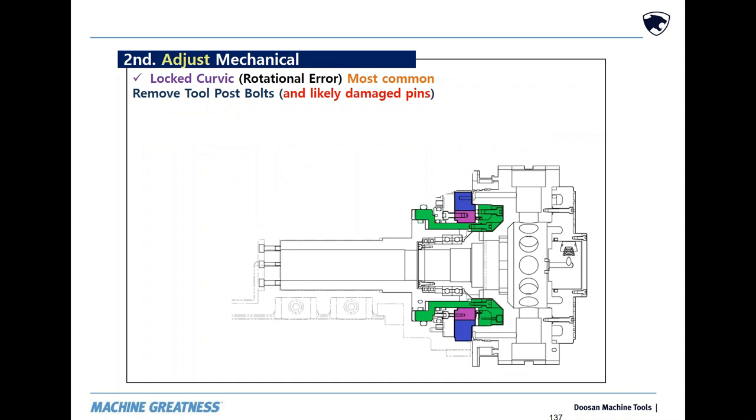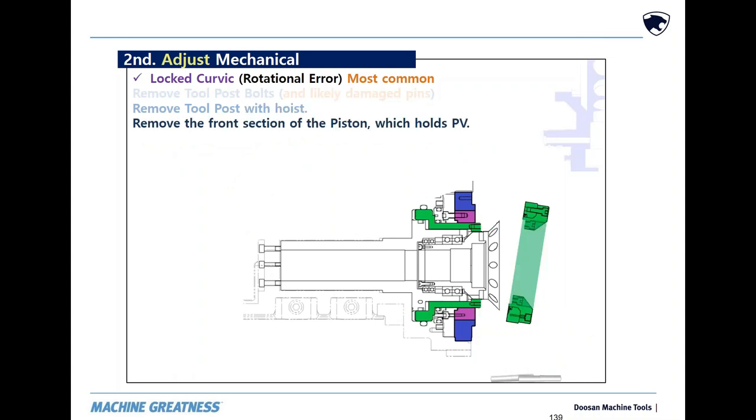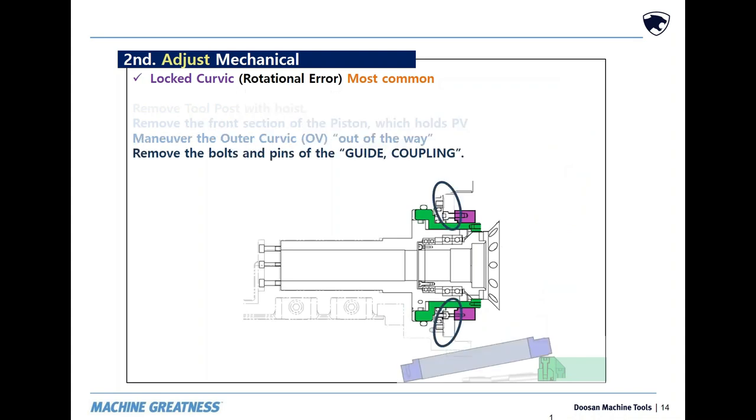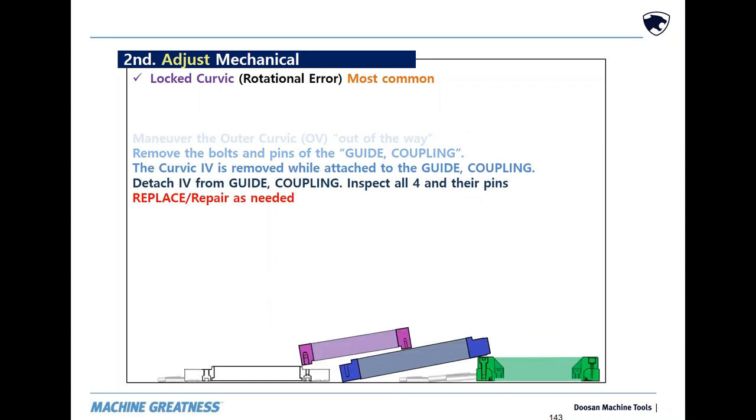Remove the turret's bolts and pins. Remove the turret with a hoist. Remove the piston clamp from the piston. Remove the outer curvic gear. The inner curvic is mounted to a guide coupling from the backside. Remove the guide coupling and bring the inner curvic with it. Detach the inner curvic from the guide coupling and inspect all parts for damage. Stone and repair as needed. Discard damaged pins.